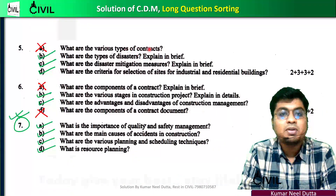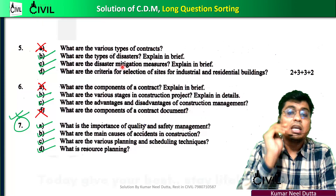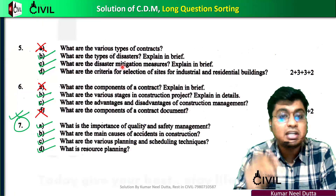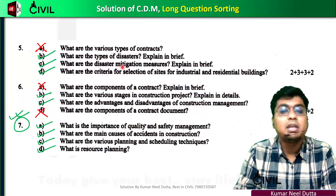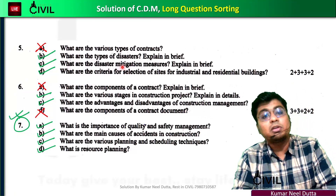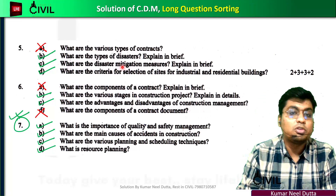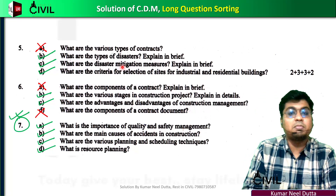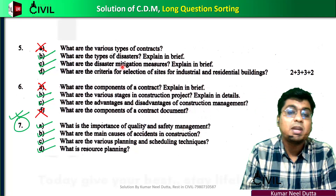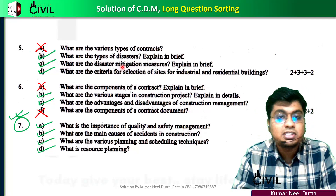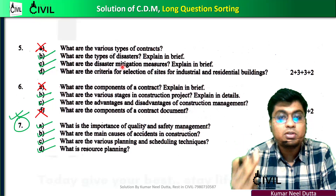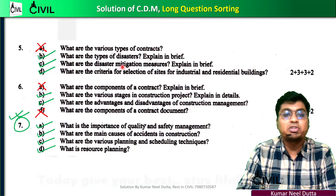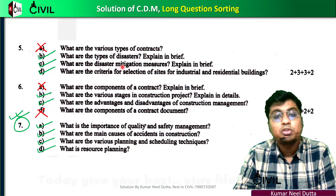First, we will cover the types of contracts. Unit 9 is disaster management — this is a very important chapter and a very important question. Disaster management, PERT/CPM, quality and safety at the construction site — this is very important.